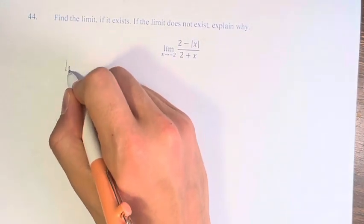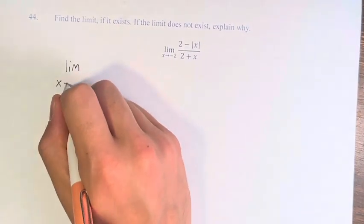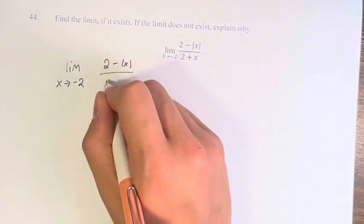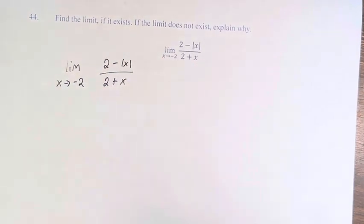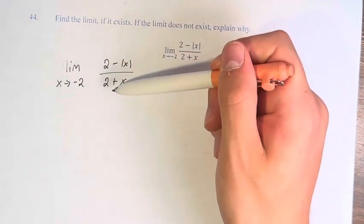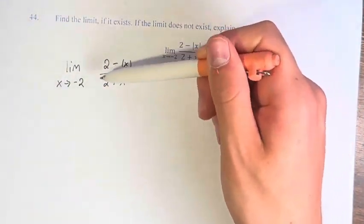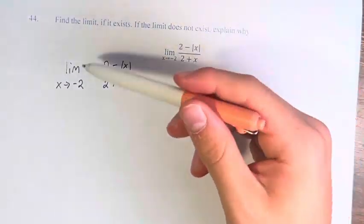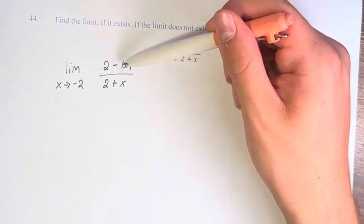Here we have the limit as x approaches negative 2 of 2 minus the absolute value of x over 2 plus x. We want to just plug in negative 2, but we can't do that because then we'd be dividing by 0. So we have to simplify this using the limit laws, and before we do that, we have to get rid of this absolute value.